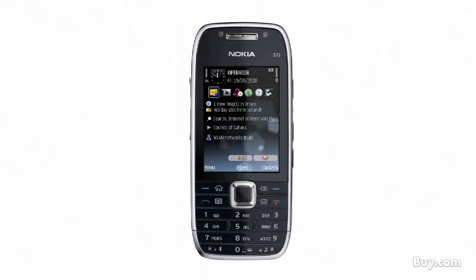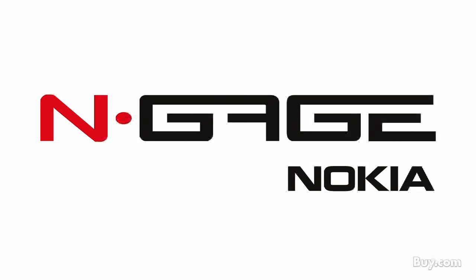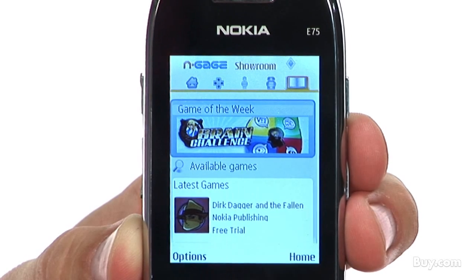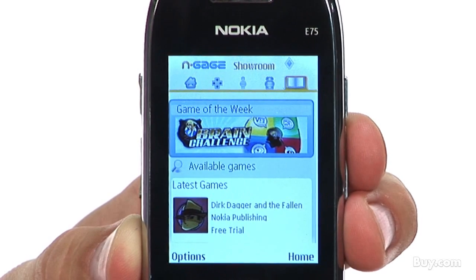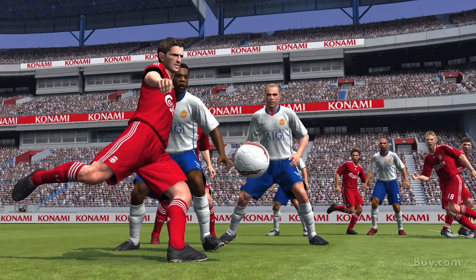What are some of the other multimedia features that the E75 has, the fun features that people are really going to like to use? The Nokia E75 is the first E-Series phone integrated with Nokia's N-Gage platform, which is Nokia's gaming platform. With N-Gage, you're able to try and buy premier gaming applications such as FIFA 09 and Star Wars Clone Wars.